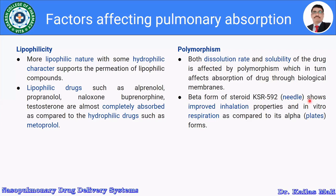The beta form shows improved in vitro respiration as compared to its alpha form, the plus form. This is about polymorphism.